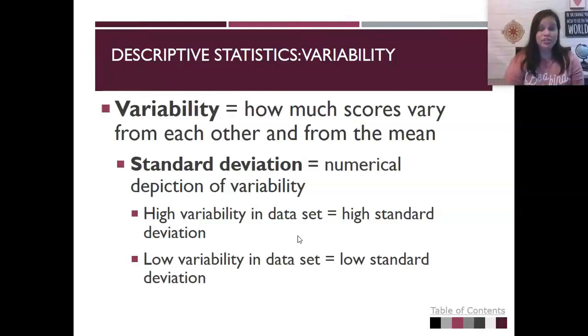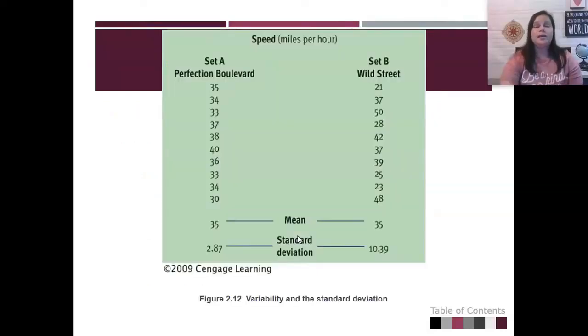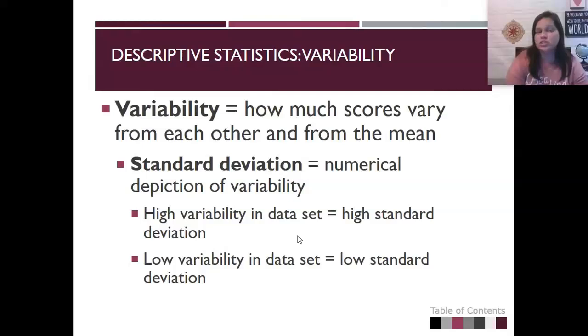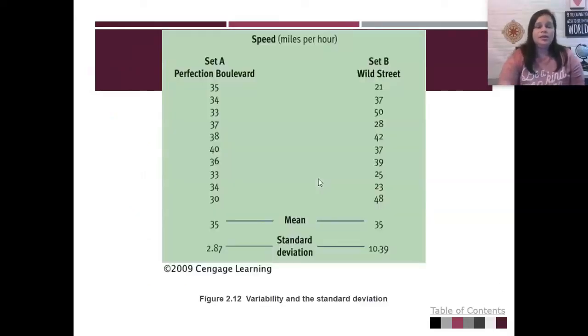Once you have the measures of central tendency, then we can start to look at variability. How much do the scores actually vary from each other and vary from the mean? And we can determine that and give it a numerical measure by looking at standard deviation. Standard deviation helps us to tell if there is high variability in the data set, like that the numbers are far apart, or if there's low variability in the data set. That's low standard deviation, meaning that the numbers are actually close together. Now, you will not ever have to calculate standard deviation in AP Psych.